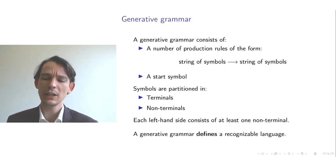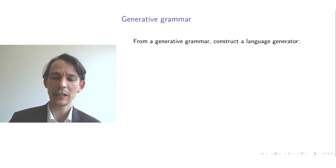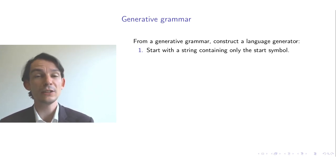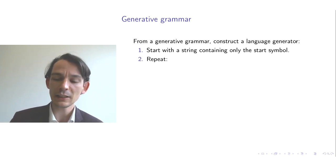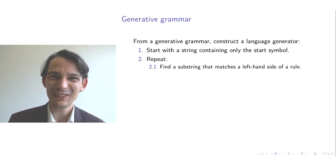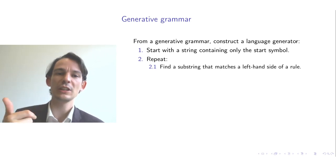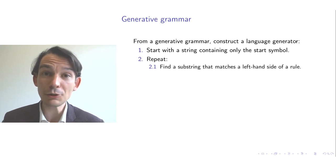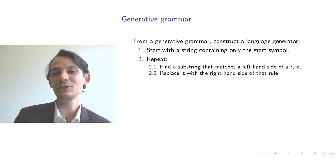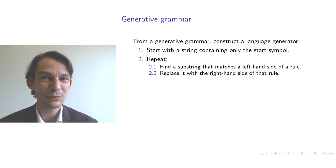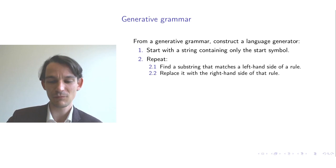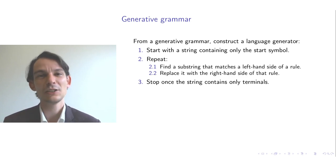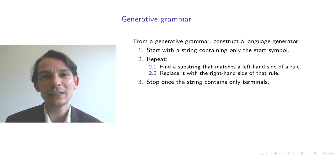To see how a generative grammar actually generates a language, you can construct a language generator as follows — it's a very simple process. Start with a string that consists of only the start symbol defined in your generative grammar. Then repeatedly perform the following steps: in the current string, find a substring that matches any of the left-hand sides of a production rule. As soon as you have a match, replace that match with the right-hand side of the production rule — it's a simple string find-and-replace operation. The process stops once the string consists only of terminals; that string is then generated by your language generator.